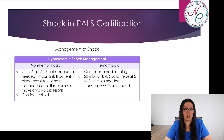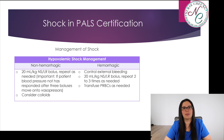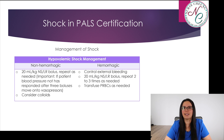For hemorrhagic shock, we want to control the external bleeding if there is any external bleeding noted. 20 mLs per kilogram of normal saline or lactated ringer bolus are usually repeated every two to three times as needed.